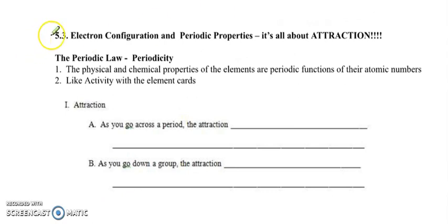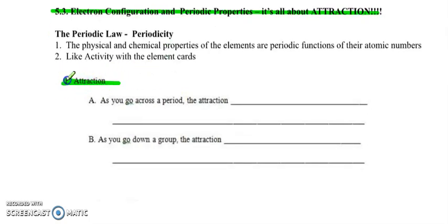Okay, now we're going to go to section 5.3, looking at electron configuration and periodic properties. It's all about attraction. So for the periodic law, periodicity, the physical and chemical properties of the elements are periodic functions of their atomic numbers. Like we already said this, like activity we may or may not have done in class with the element cards. It is all about attraction.